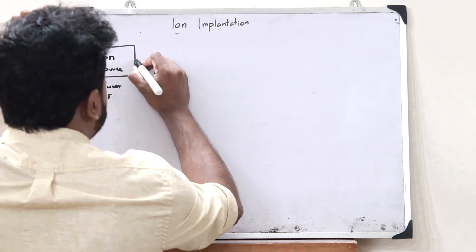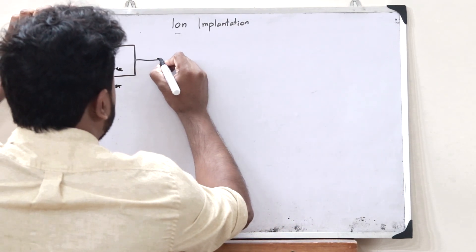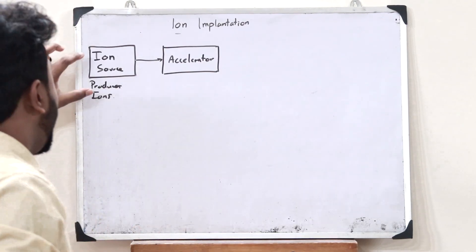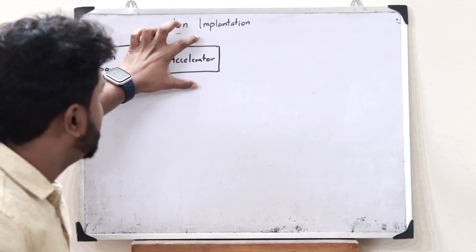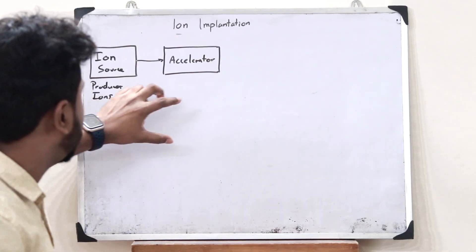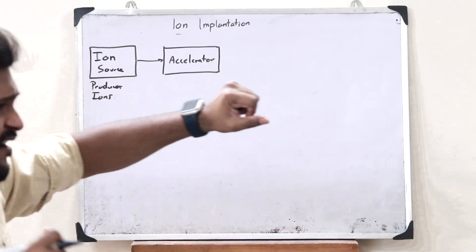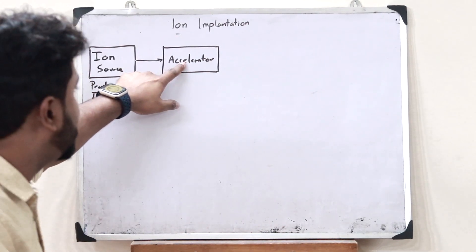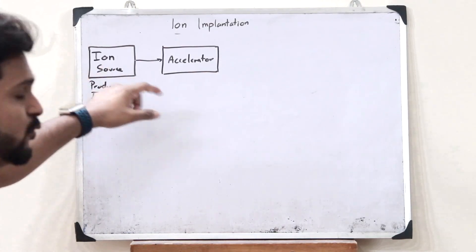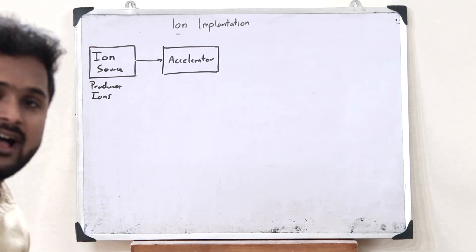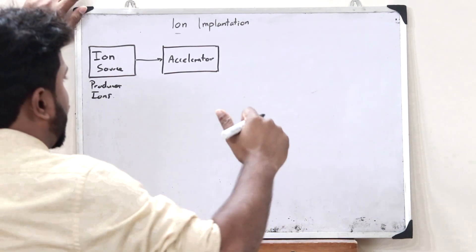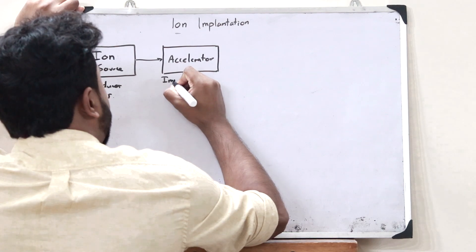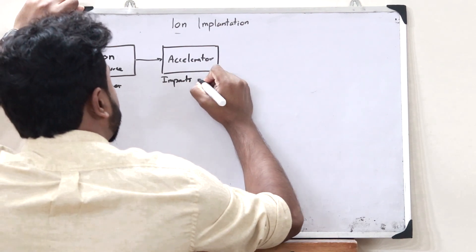These ions are now passed to a particular accelerator. When these ions are passed through this particular accelerator, they are accelerated very quickly because the accelerator provides energy to these particular ions. The accelerator imparts energy onto these ions.